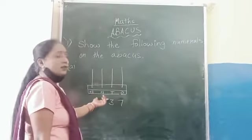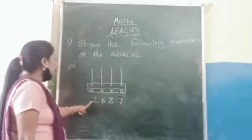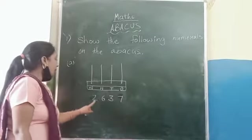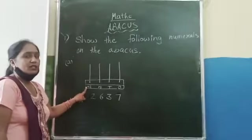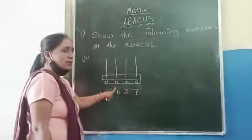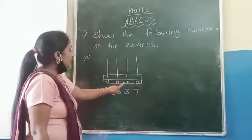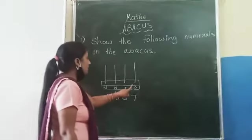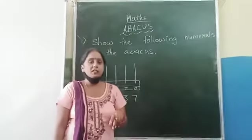Now I will take an example. The number is 2, 6, 3, 7. 2 is in the 1000 place, 6 is in the 100 place, 3 is in the 10 place, and 7 is in the 1 place.